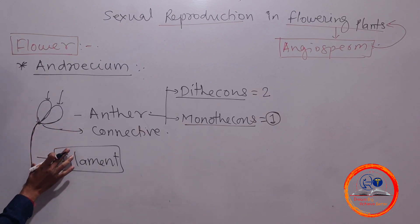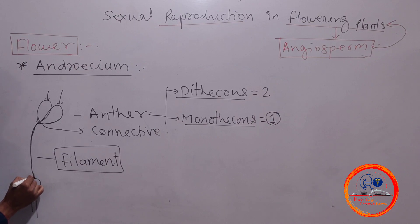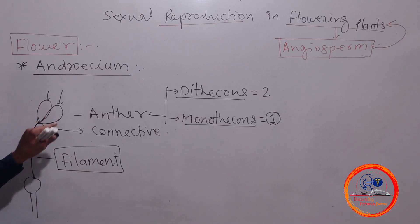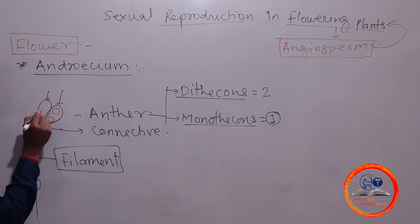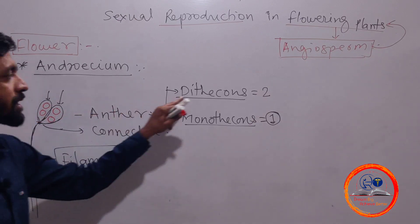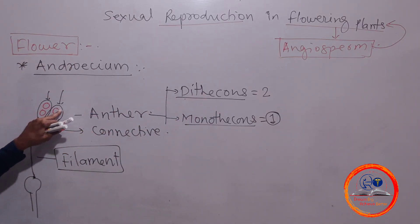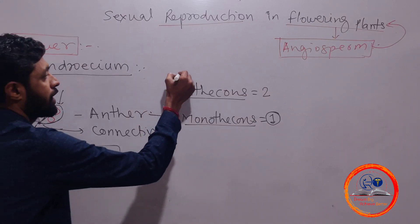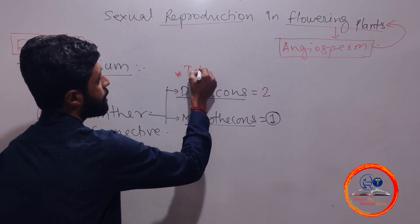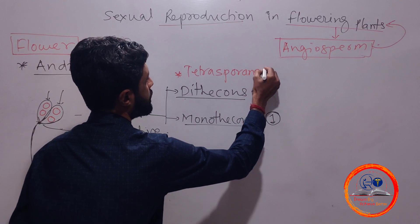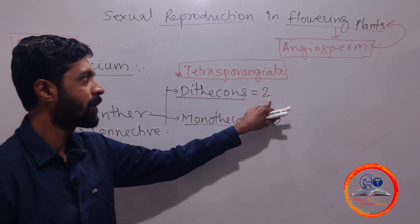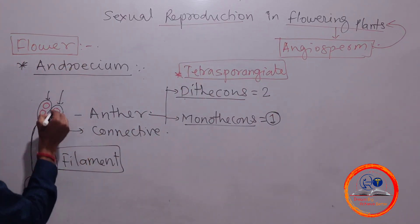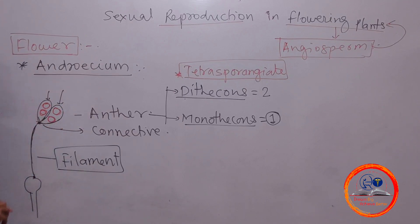One end of the filament remains attached to the thalamus and the other end to the anther. Since the anther is dithecous and each lobe has two sacs, a dithecous anther has four pollen sacs or microsporangia. We therefore call this anther tetrasporangiate — dithecous because it has two lobes, and tetrasporangiate because it has four microsporangia or pollen chambers.